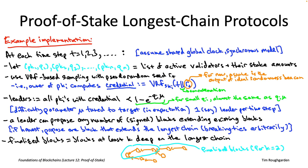In lecture eight we talked at length about how to set the security parameter K. The trade-off is: the bigger K is, the less likely there'll ever be a consistency violation, but the more time users have to wait before their transaction gets confirmed. The right value for K depends on your assumptions about the fraction of stake controlled by Byzantine nodes and the risks you're willing to tolerate. For concreteness, you probably want to think of K as at least in the dozens, and possibly even in the hundreds depending on parameter choices.